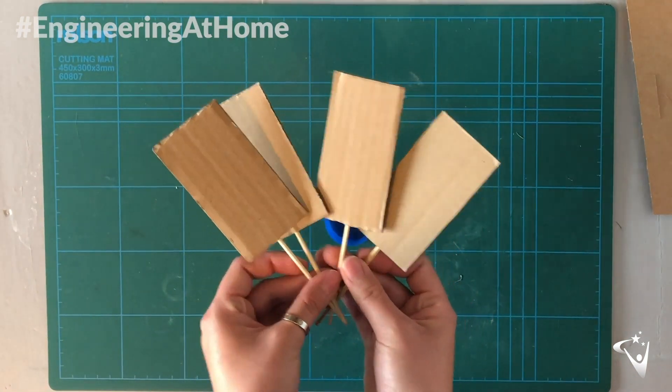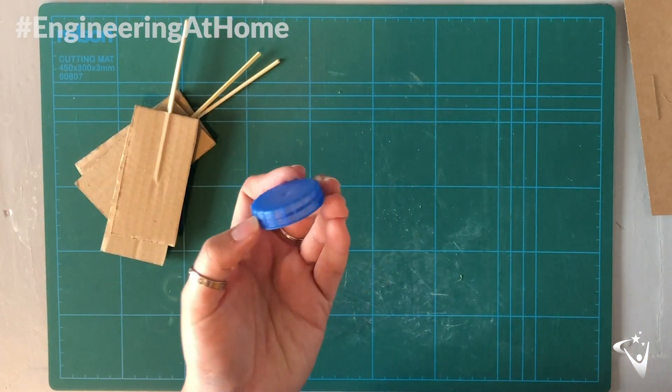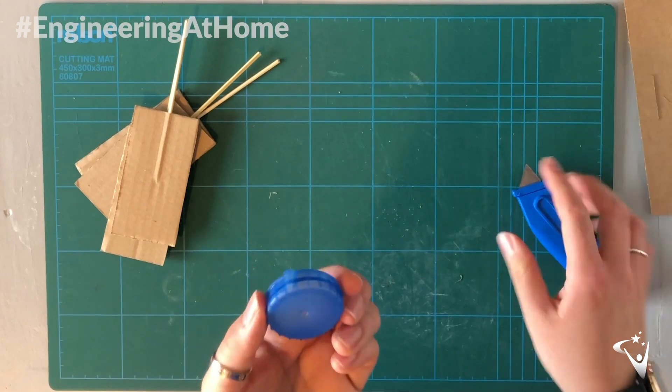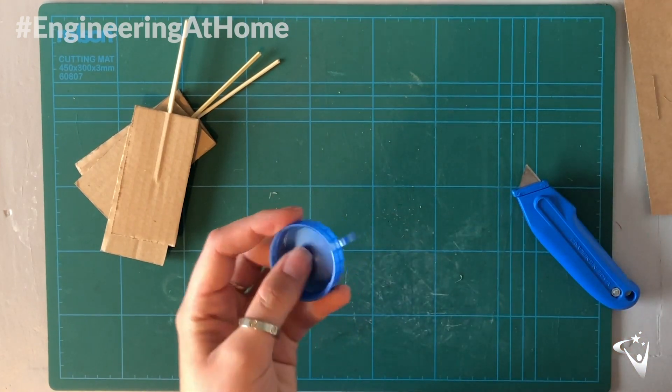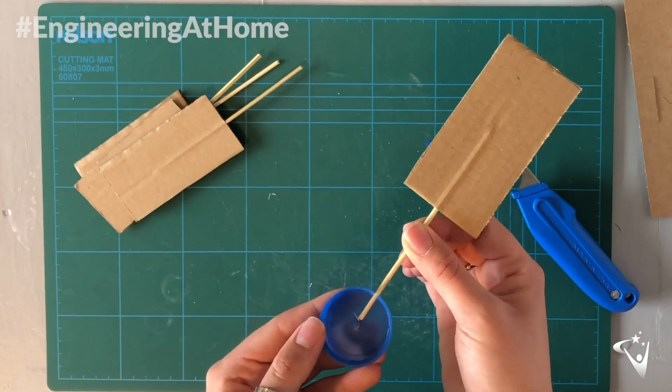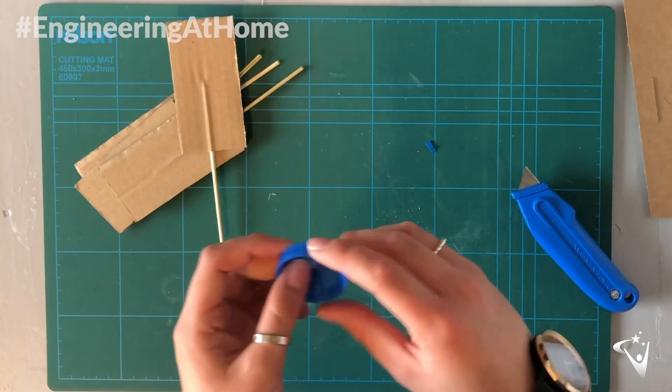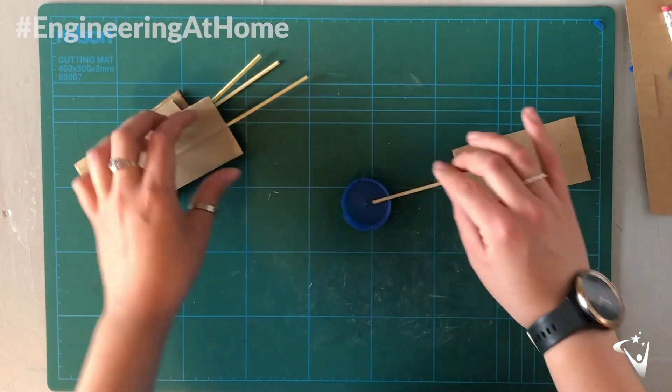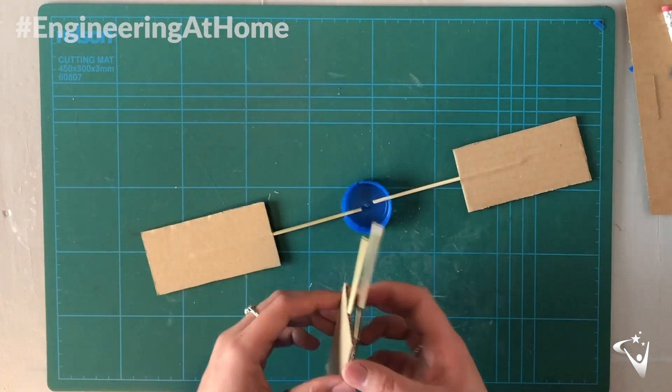So you should have four identical blades. Then we want to make a small slot in the milk bottle lid and this is where the skewers are going to go through. Then you should see the skewers fitting quite nicely. Cut a slot for each one of your blades. However many blades you have make sure they're symmetrically spread around the lid so your wind turbine is going to be balanced.